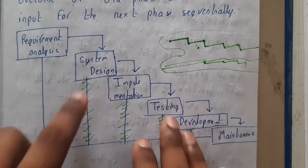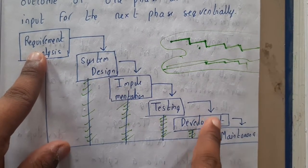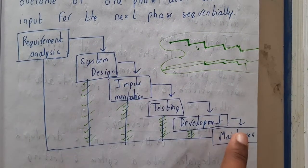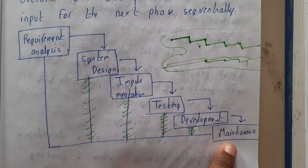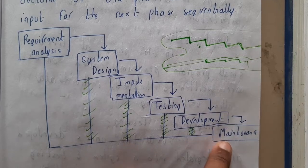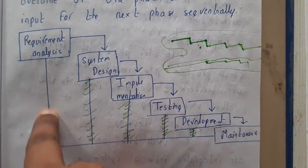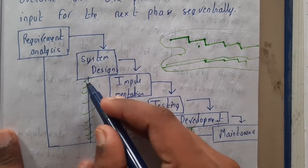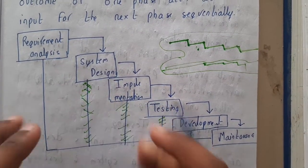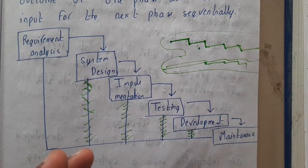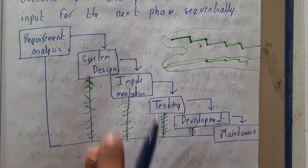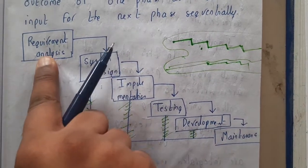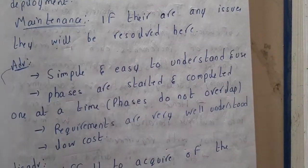Each step is independent of the other and they do not overlap. The only way to return back is through maintenance — once maintenance is done, you go back to requirement gathering and repeat the same process. There are no in-between paths; it is strictly a one-way process.